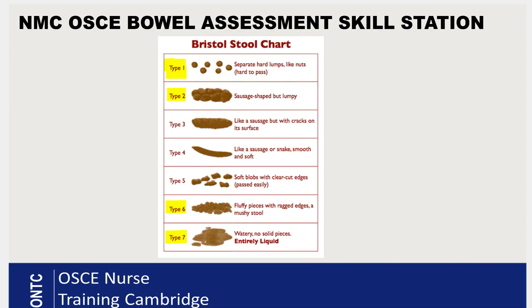On the next screen you can see the Bristol stool chart. You don't need to know every type but you really do need some understanding of it. Type 1 and 2 come under constipation — type 1 is hard lumps and type 2 is sausage-shaped but lumpy. Types 3, 4, and 5 are considered normal and won't typically be given in your exam. Types 6 and 7 relate to diarrhea — type 6 is fluffy loose stool with some solid parts, and type 7 is completely watery stool.